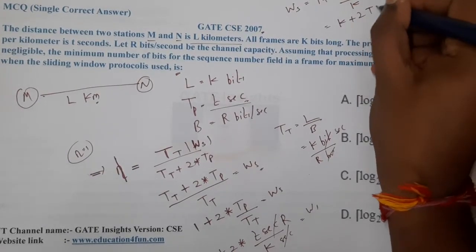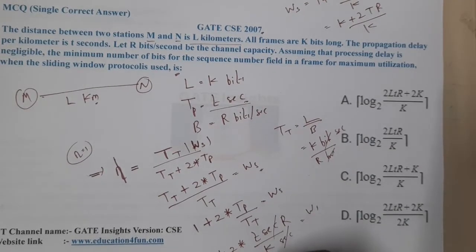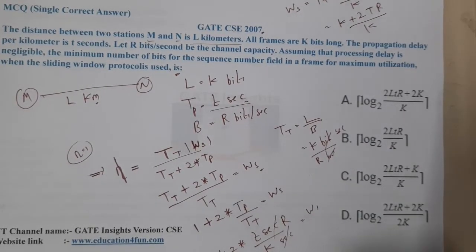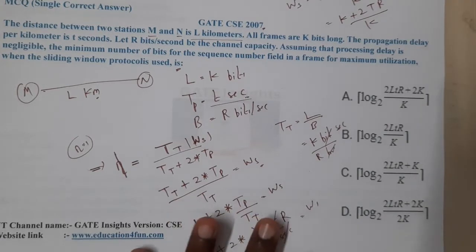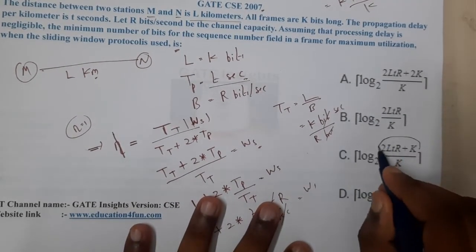Let us take the LCM first, so it becomes K plus 2TR by K. Now let us check whether any option is matching. I think option C's value is matching.